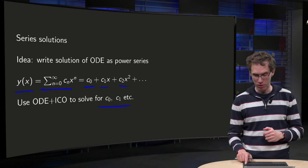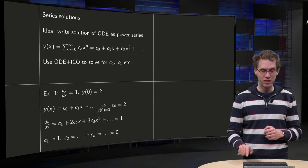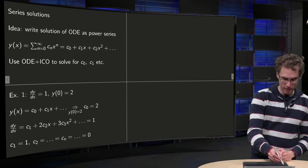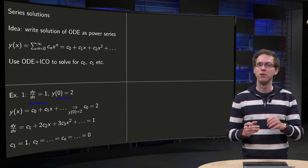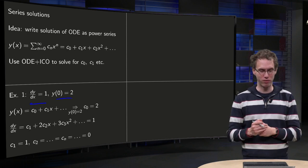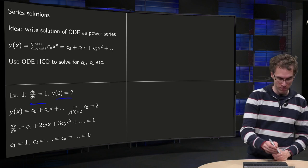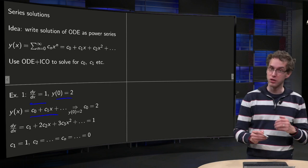So how does that work? Let us take some very easy examples first. So dy/dx equals 1 and y(0) equals 2. I know you can solve this directly by integration, but just to illustrate how the method works. So we plug in y equals c0 plus c1 times x, etc.